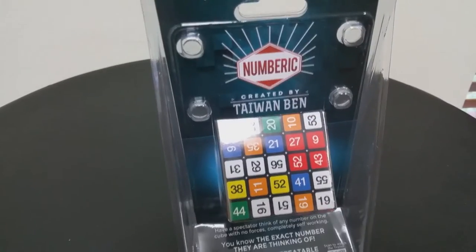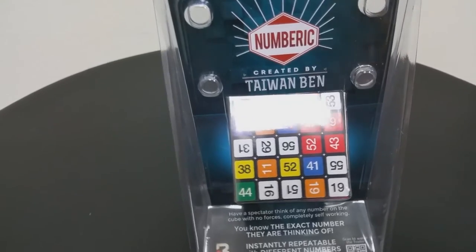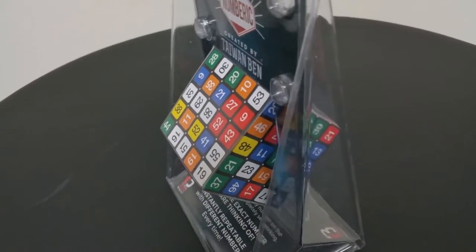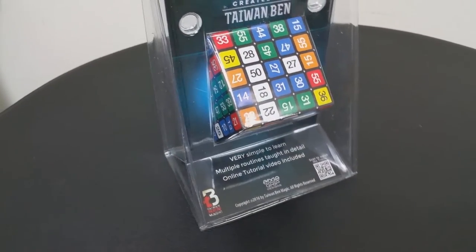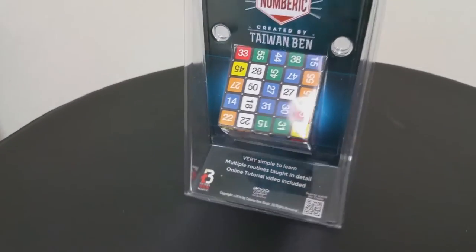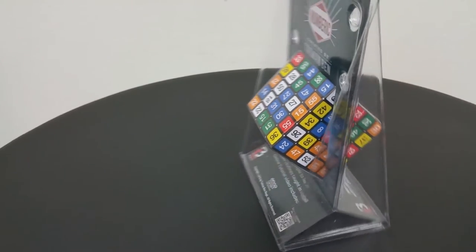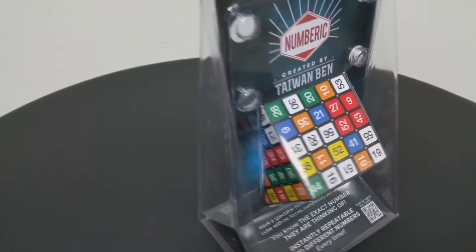All right, so a couple questions we always ask about all of our magic reviews. And the first of which is what is in the box. What's in the box? You're getting a beautiful plastic-shelled peg case that is holding a 5x5x5 Speedcube. And inside that, you're going to get the download code. And you're going to get a few little gimmicks that will help you with the routining.